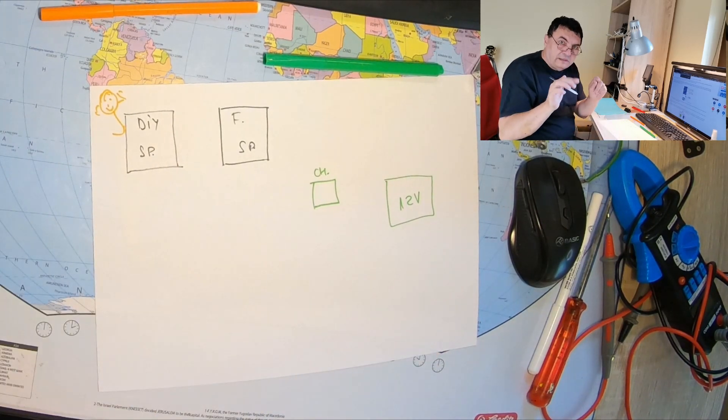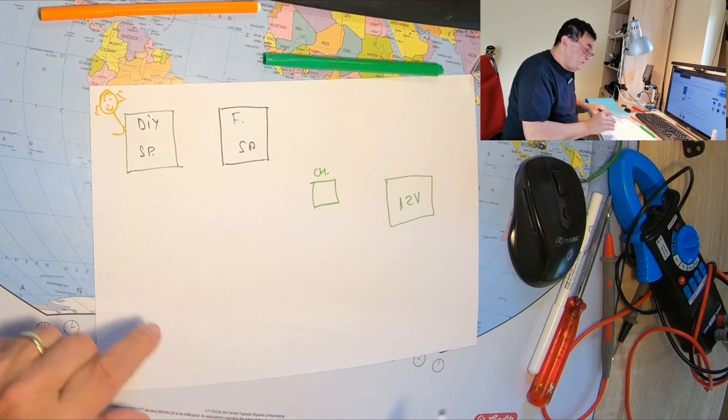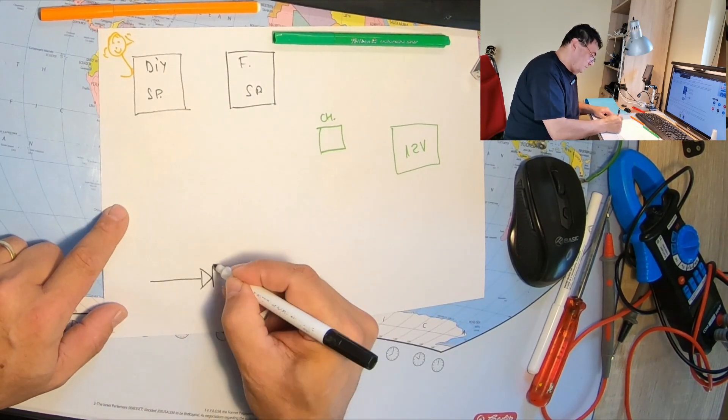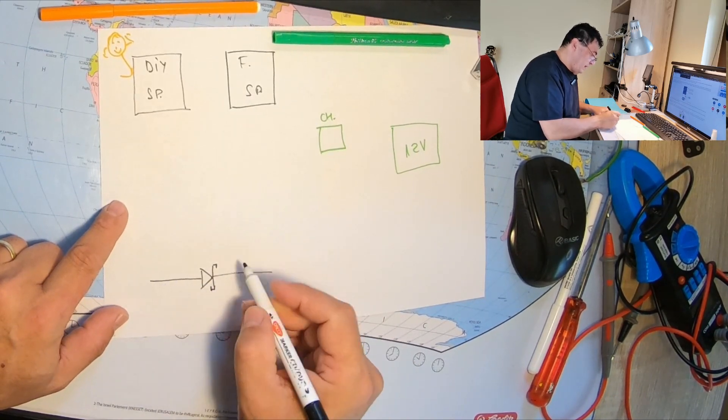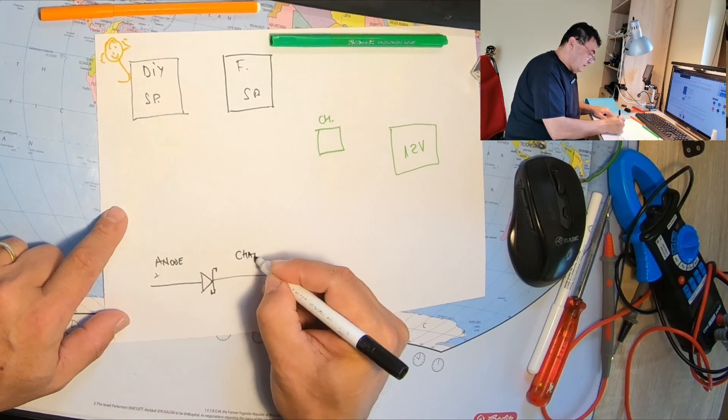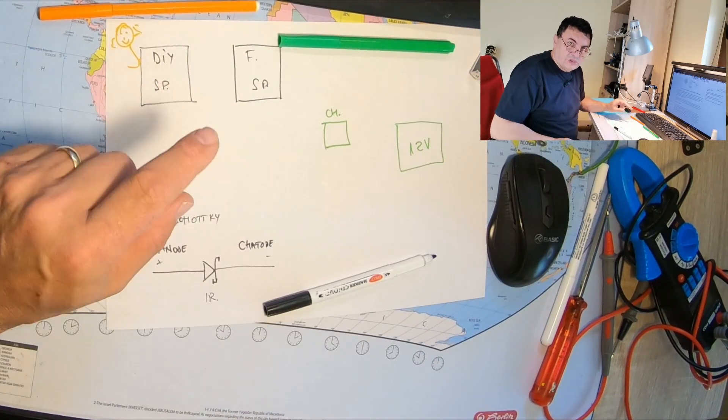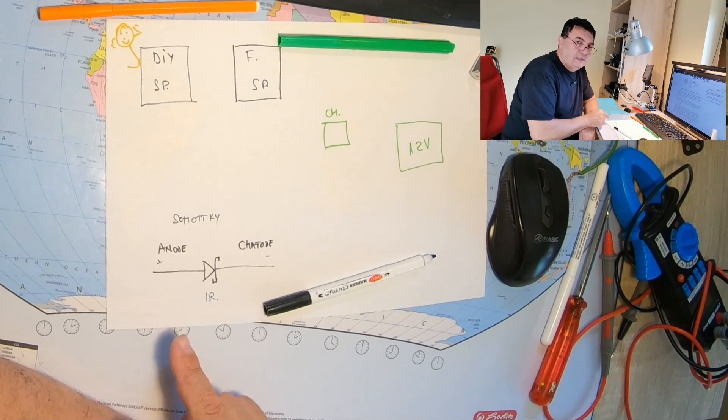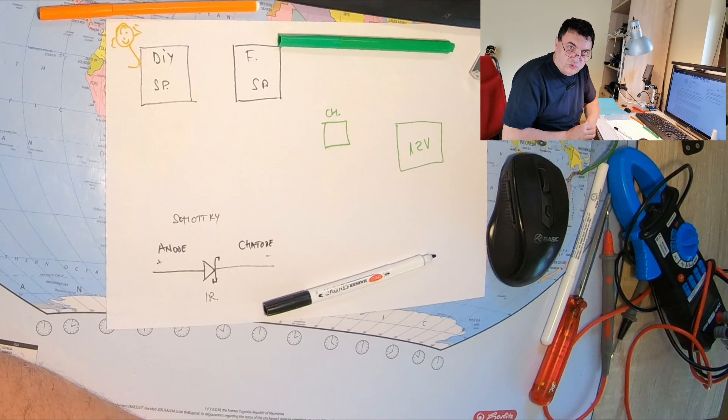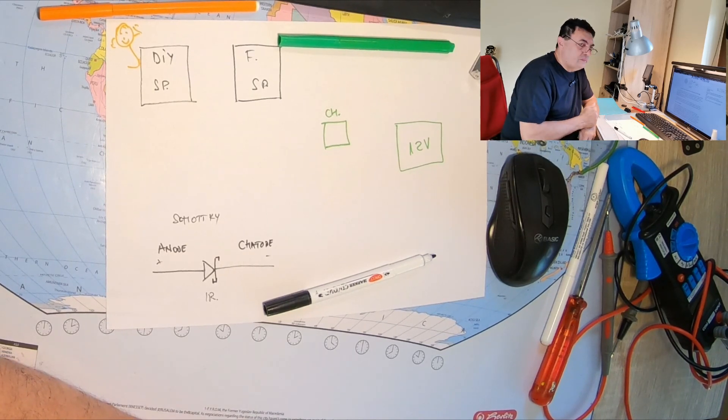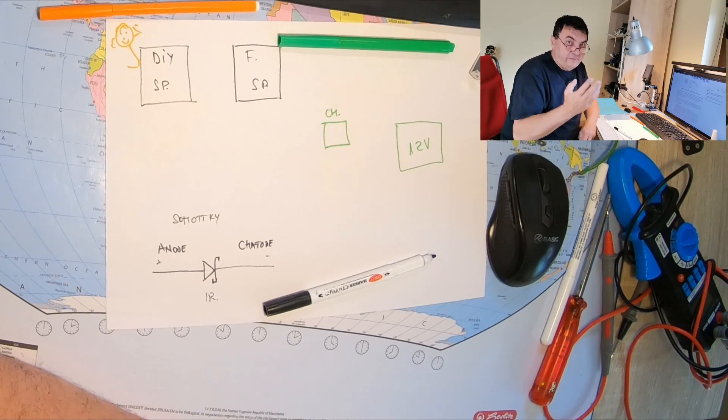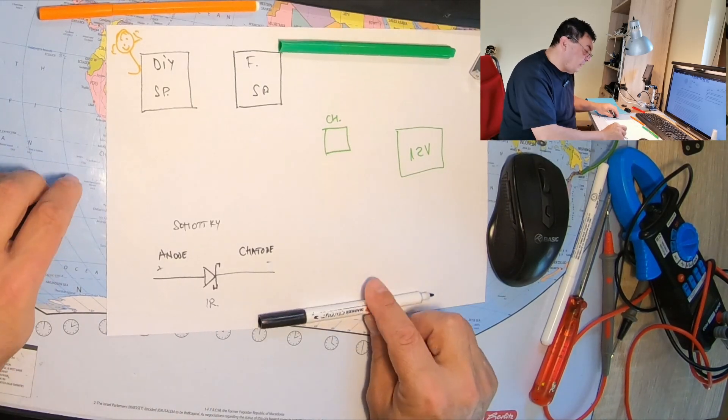In this case, a very simple solution is to use a Schottky diode. This is the symbol for the diode and here we have plus and minus, anode cathode. Why use a Schottky diode? Because the internal resistance is very low, so there are very low losses. If we use a normal diode we have a 0.5 volt drop and evidently a loss of power.